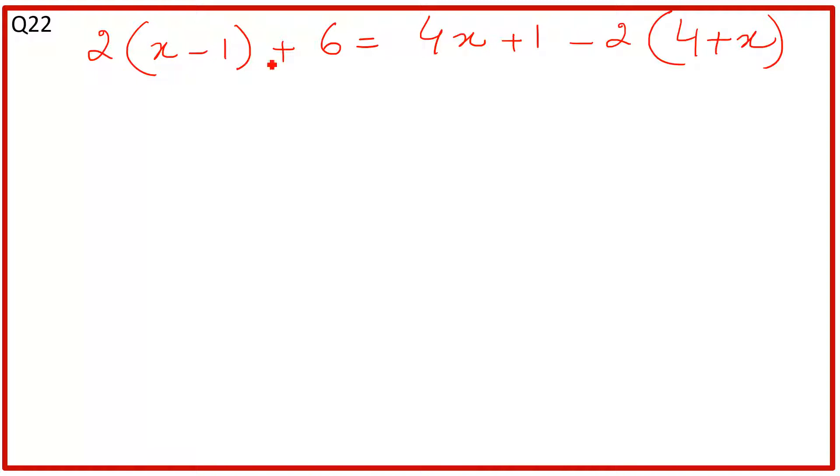We have parentheses here - 2 in front of this parenthesis and negative 2 in front of that parenthesis. One by one, you have to multiply whatever you have inside the parenthesis with 2.